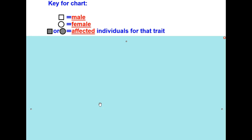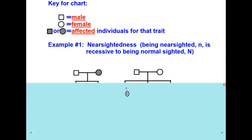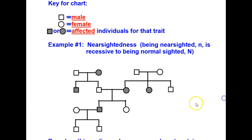Now let's work through some examples of some pedigrees. In our first example, we'll discuss nearsightedness. Nearsightedness — being nearsighted — is represented by little n, and is recessive to being normal sighted, which we would assign a capital N.